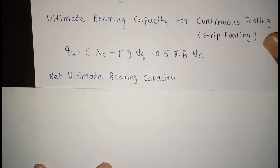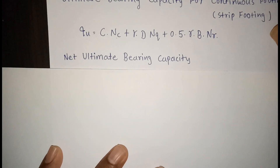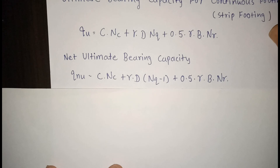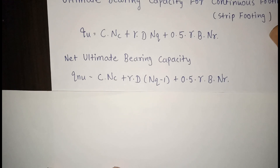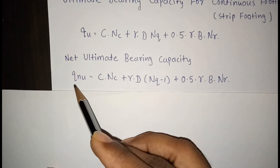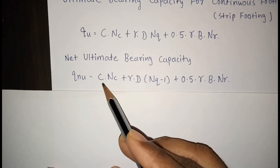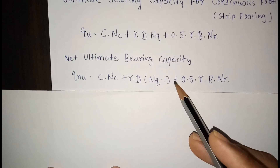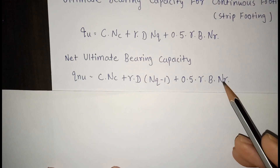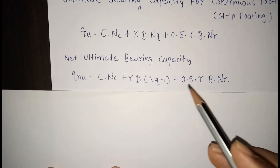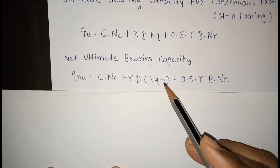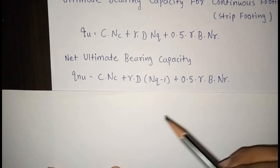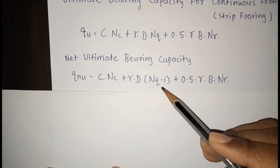The next formula is for net ultimate bearing capacity. QNU = CNC + γD(NQ − 1) + 0.5γB·Nγ. The only difference from the ultimate bearing capacity formula is the term (NQ − 1) instead of NQ.